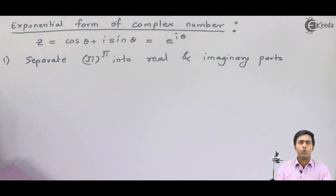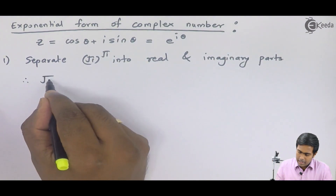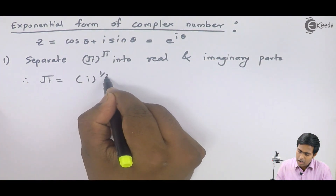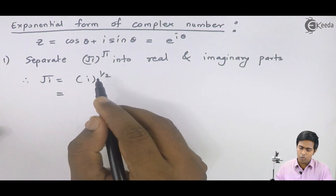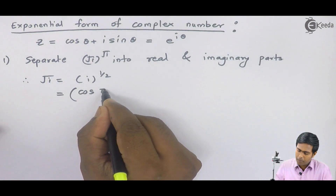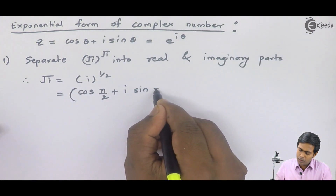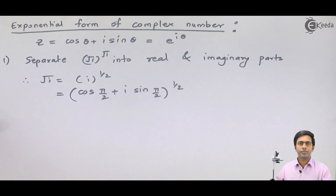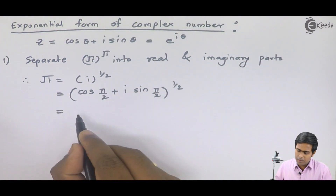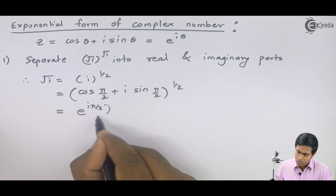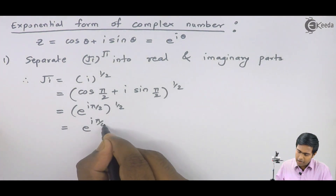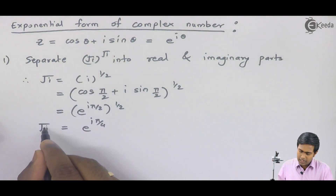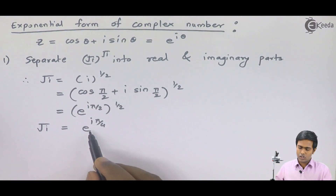In such a scenario we have to consider the exponential form of the complex number in the base. The root i can be represented as i raised to half. Since i is in Cartesian form, we convert it to polar form: cos(π/2) + i sin(π/2), whole raised to half. In exponential form this becomes e raised to iπ/2, whole raised to half, which gives us e raised to iπ/4. So √i in the base is equal to e raised to iπ/4.